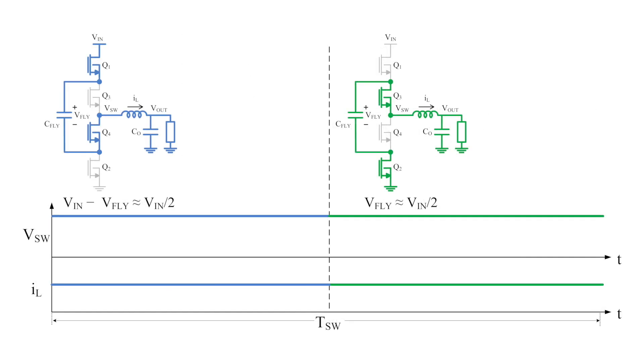At this point, the switch node remains at VIN over two all the time, while the controller changes between stage one and stage three in order to charge and discharge the flying capacitor each cycle.